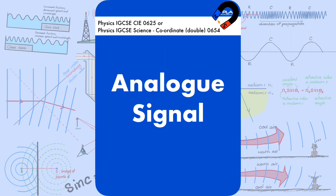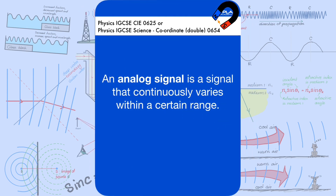An analog signal is a signal that continuously varies within a certain range.